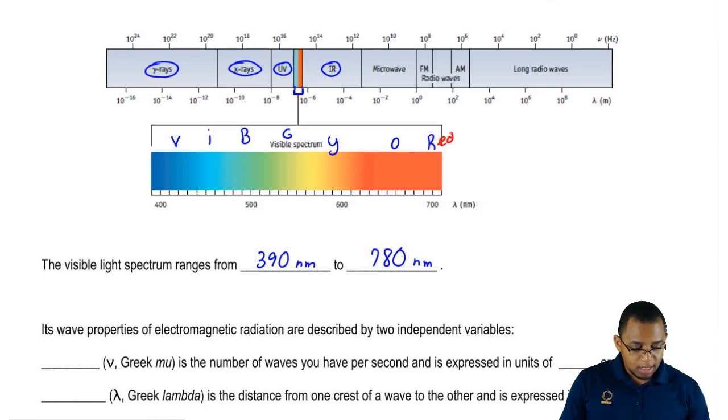We're going to say red, orange, yellow, green, blue, indigo, and violet.